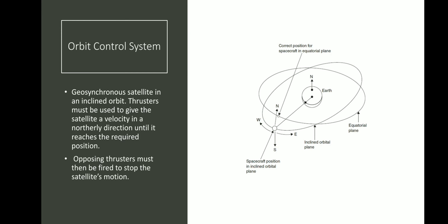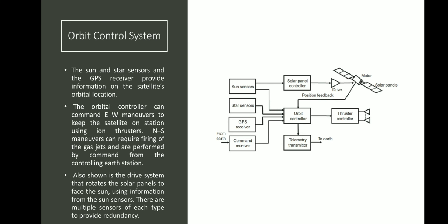Now we look at the orbit control system. The diagram shows a geosynchronous satellite in an inclined orbit, with an equatorial plane and an inclined orbital plane. If the satellite's orbital plane has changed for some reason, it needs to bring its position back to the equatorial plane. Thrusters must be used to give the satellite a velocity in the required direction — in this case, a northerly direction — until it reaches the required position. The ultimate aim is to make the satellite remain in the equatorial plane, since we are discussing the geostationary orbit.